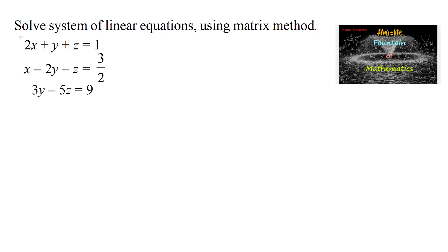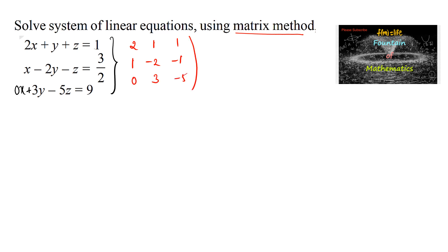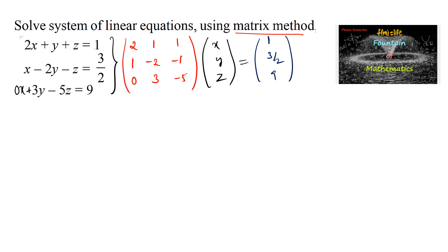Solve a system of linear equations using the matrix method: 2x + y + z = 1, x − 2y − z = 3/2, and 3y − 5z = 9. The third equation has no x term, so we write it as 0x + 3y − 5z = 9. The coefficient matrix A has rows [2, 1, 1], [1, −2, −1], [0, 3, −5], the variable matrix X is the column [x, y, z], and the constant matrix B is the column [1, 3/2, 9], giving the system AX = B.